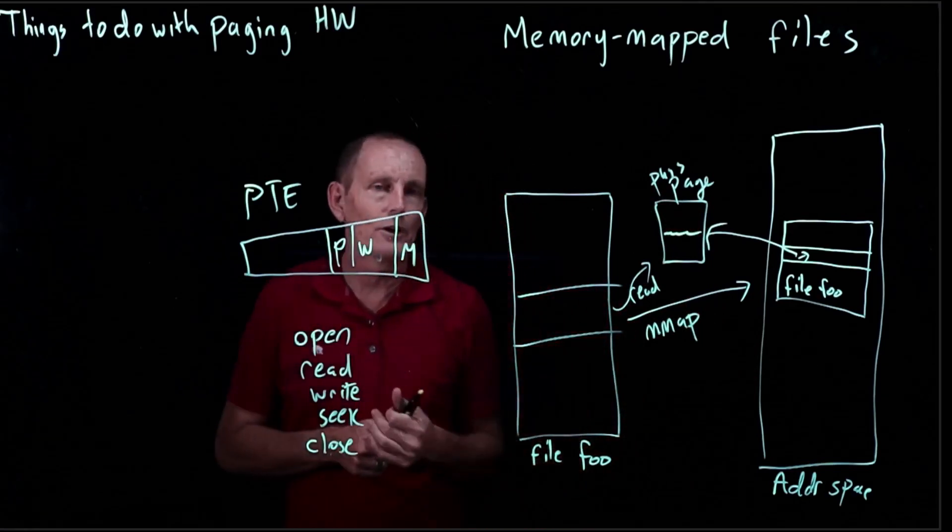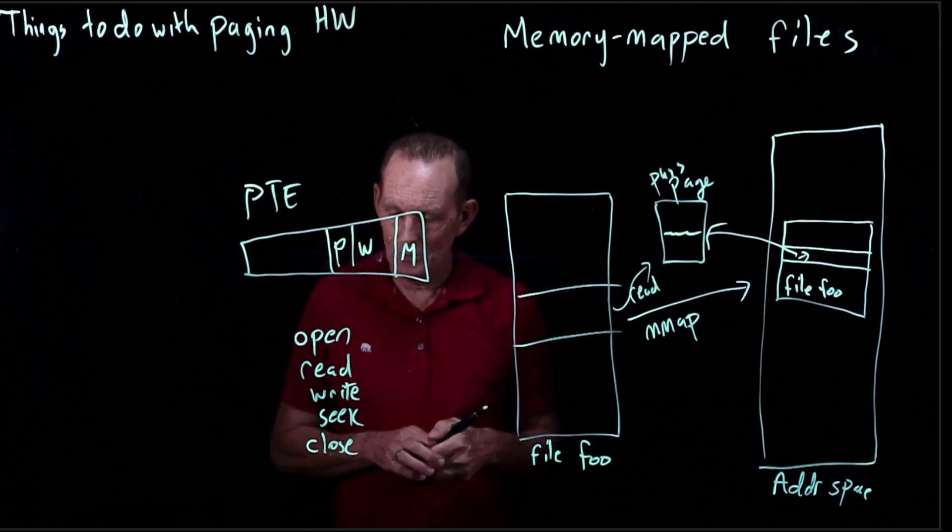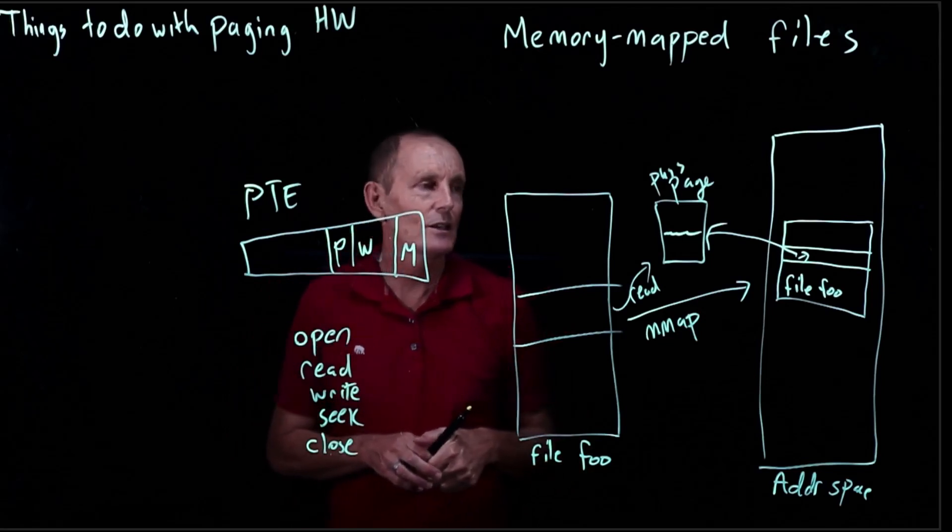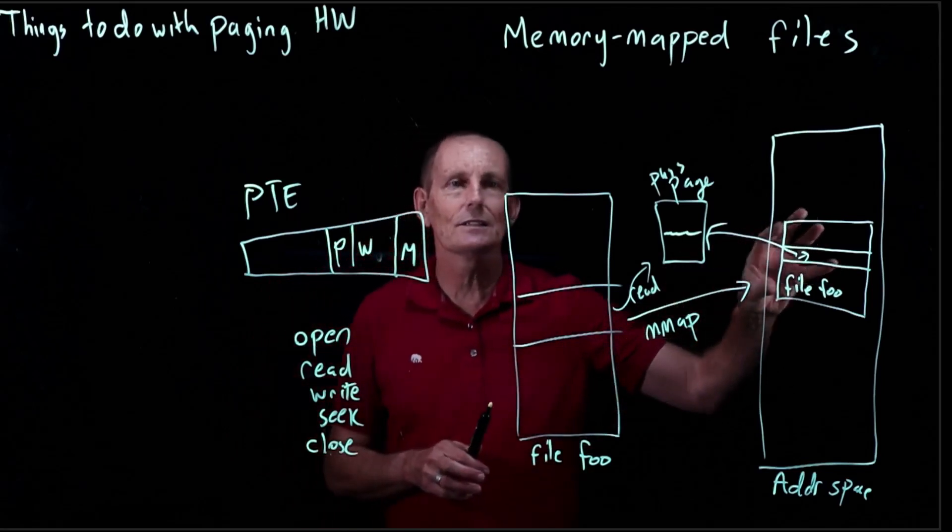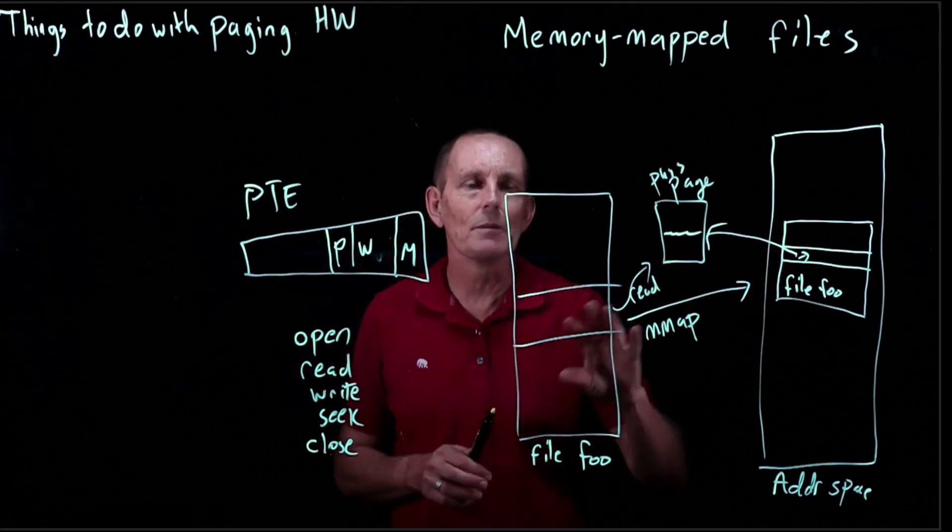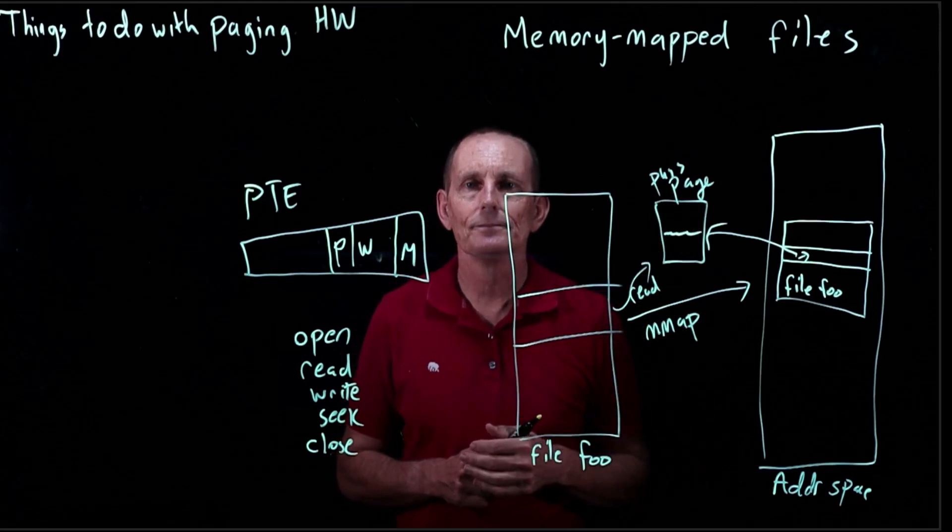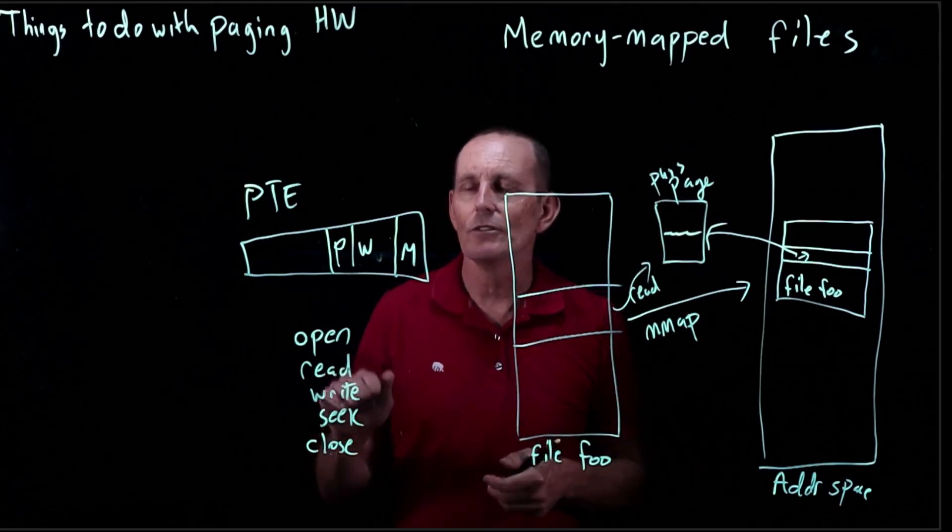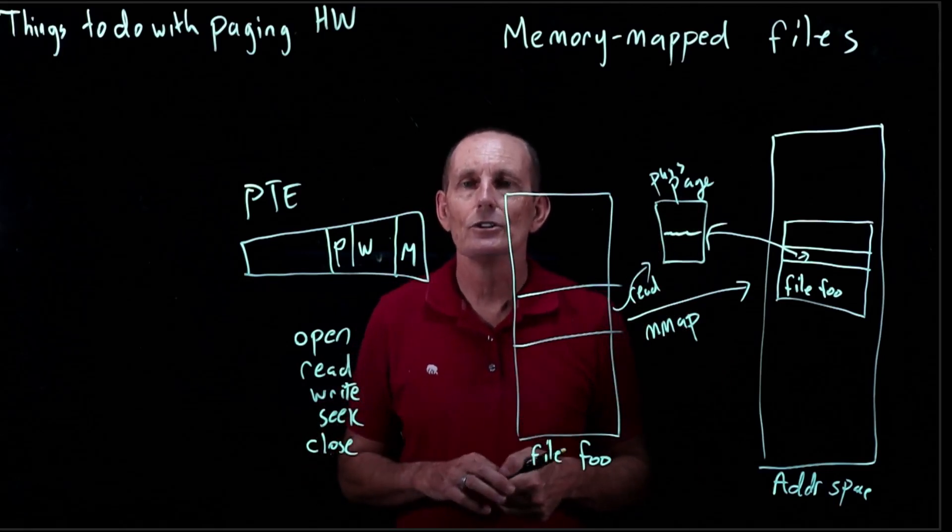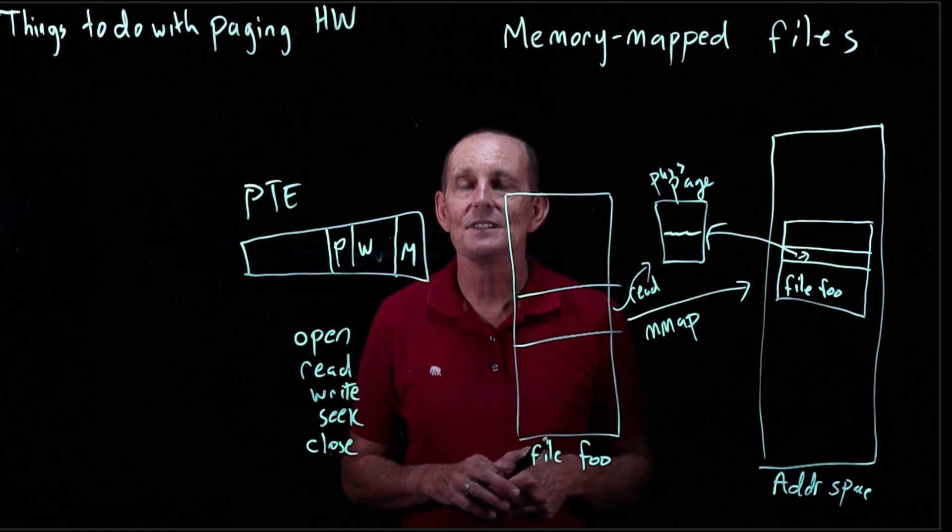Memory-mapped files also are a handy way to share between processes. So you can actually have two processes that both have the same file memory-mapped, and they can be sharing the same physical pages. Just in the same way that if you're reading and writing, you have two files that are reading and writing, they're going to see the same data.